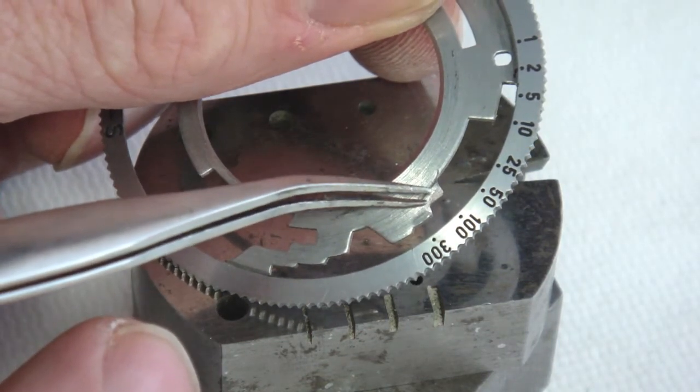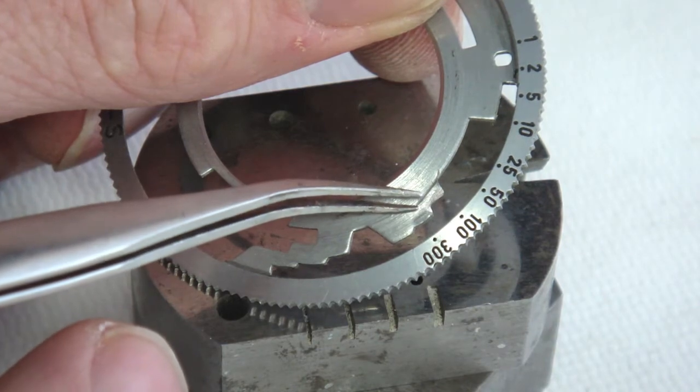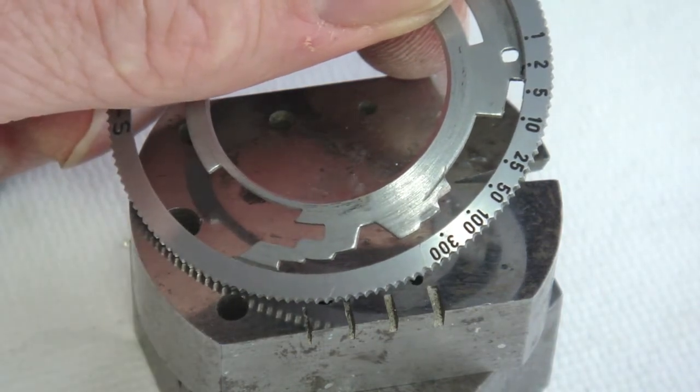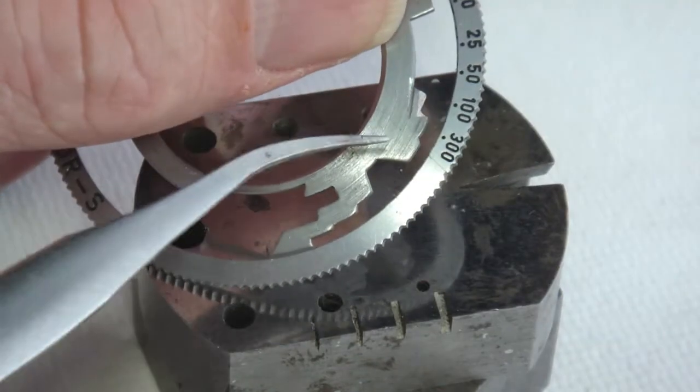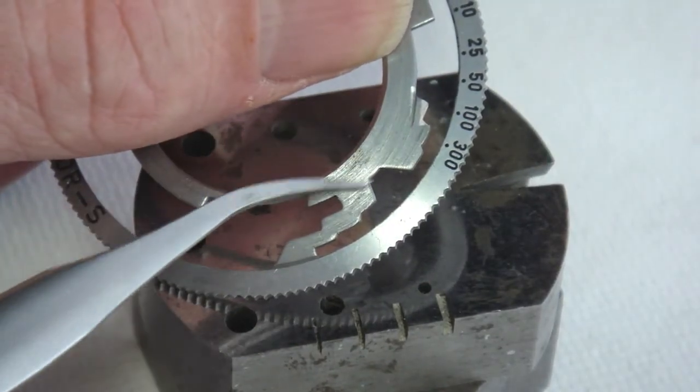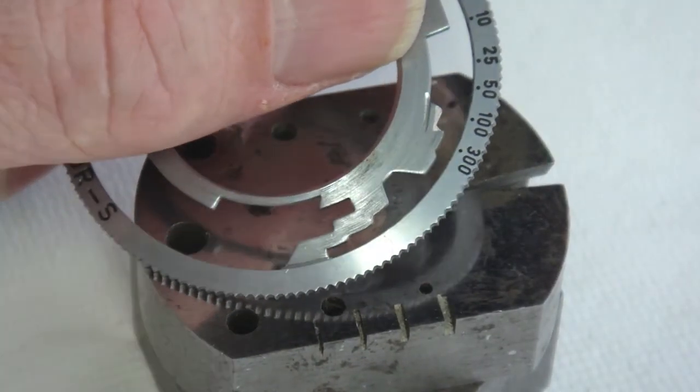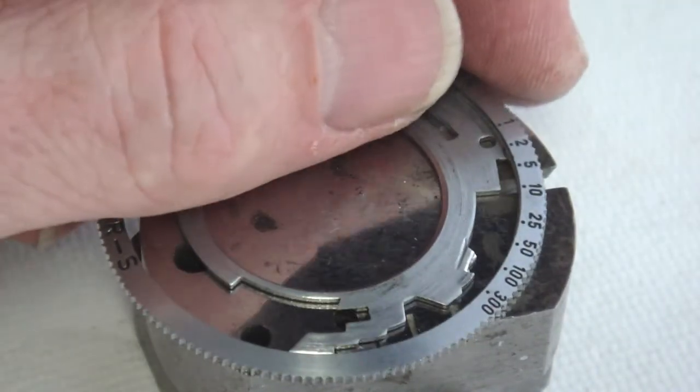If striking a groove does not produce the depth of engagement that you need, do not continue to deepen the groove. Instead, strike another groove behind it. Each individual cam lobe will need to be addressed accordingly.